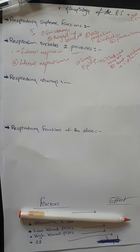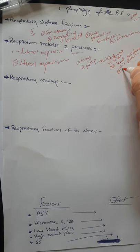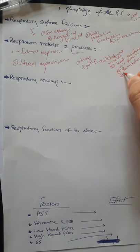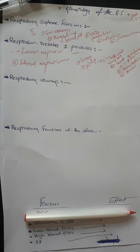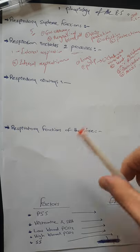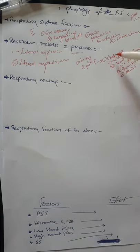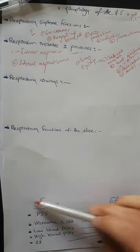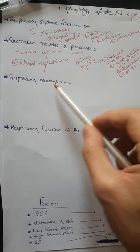The least resistance to airflow is found in the very small bronchioles and terminal bronchioles because of their large cross-sectional area. Third, a brain center which controls the respiratory muscles. Fourth, nerves which connect the brain with the respiratory muscles. So the pump consists of chest wall muscles, least resistance to airflow, brain center, and nerves.